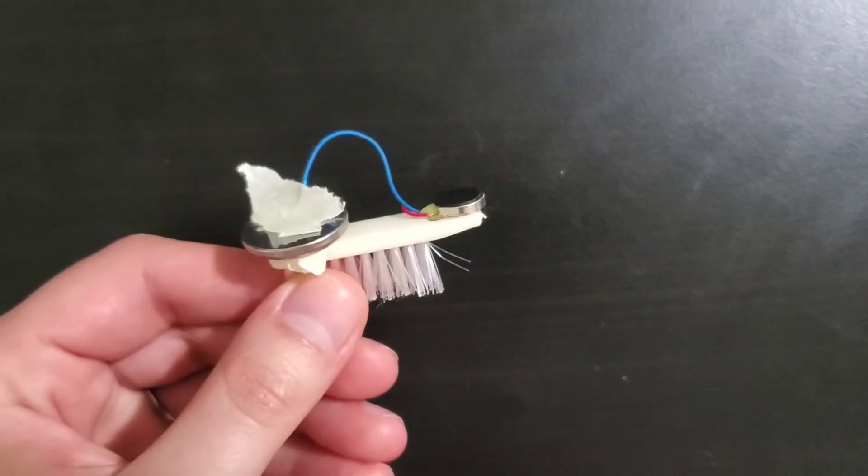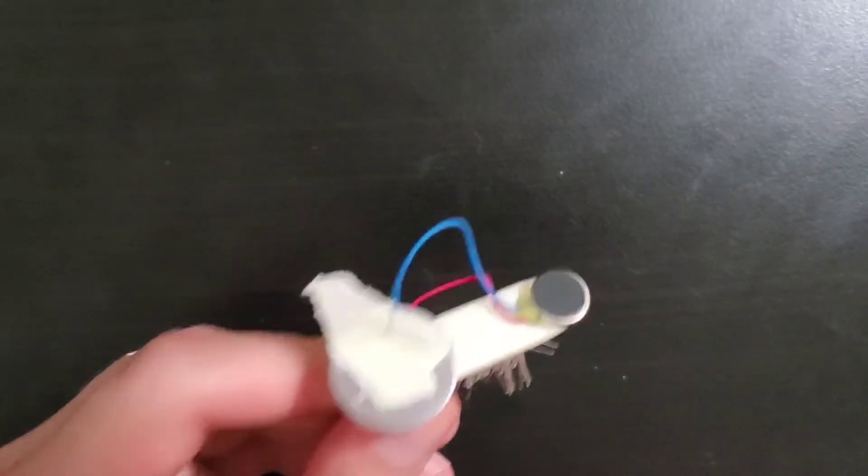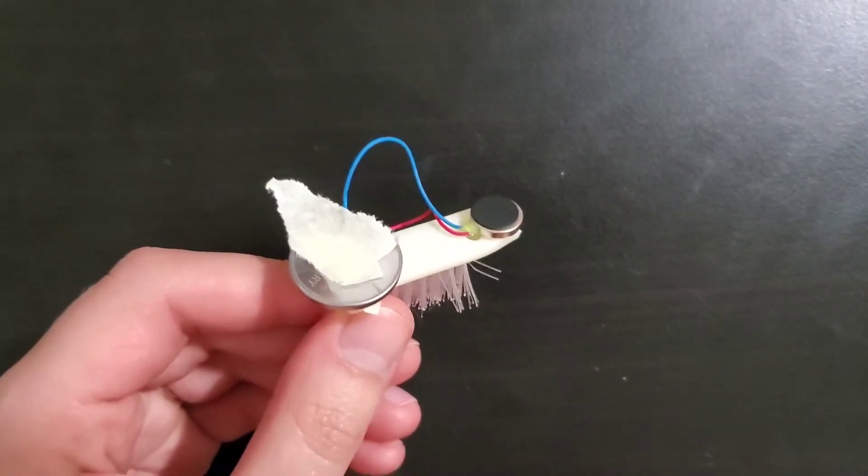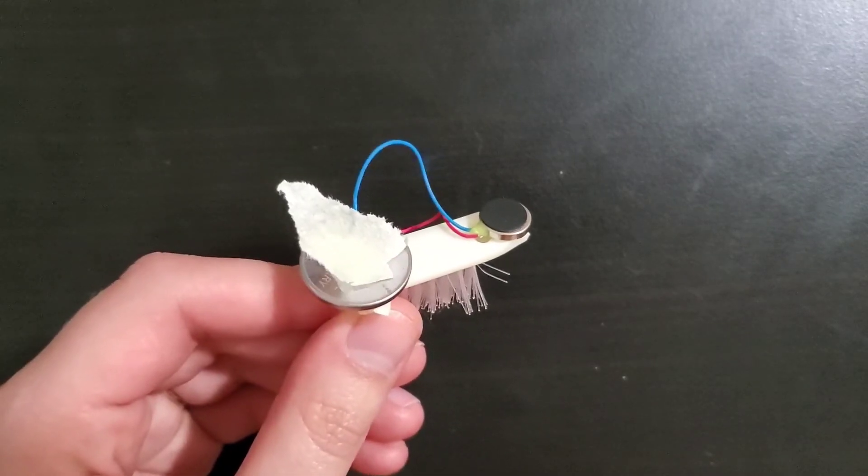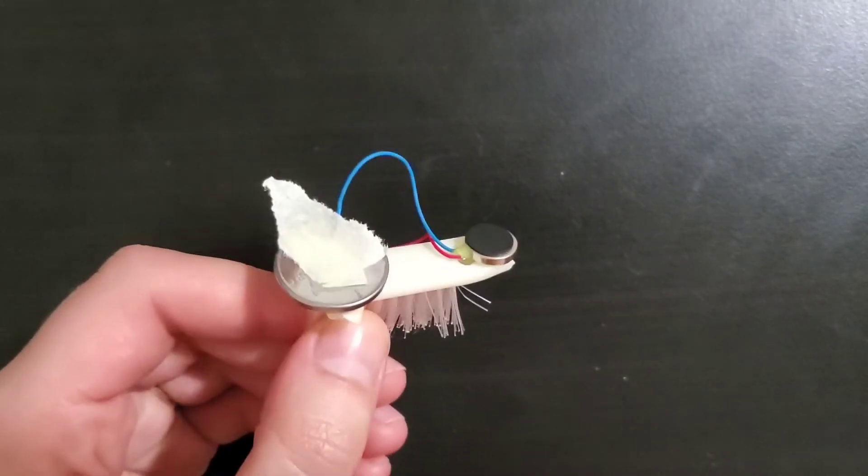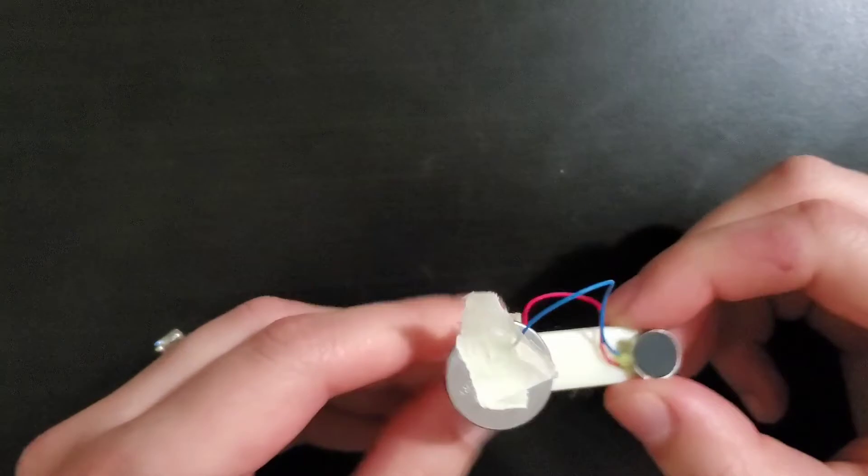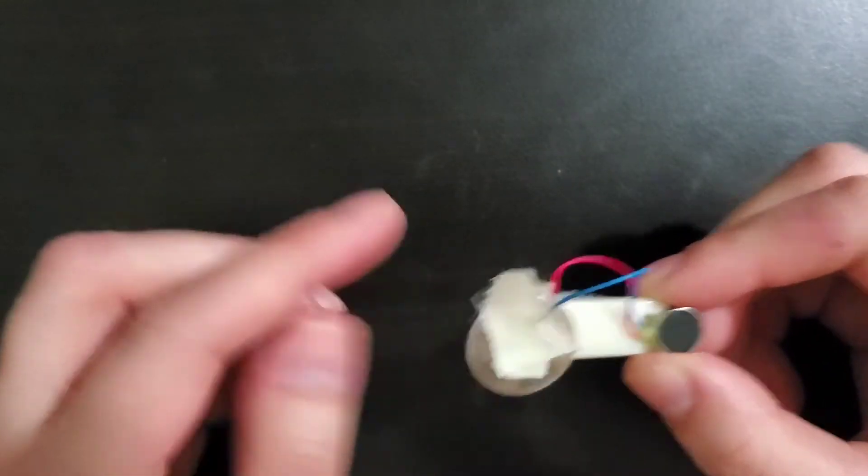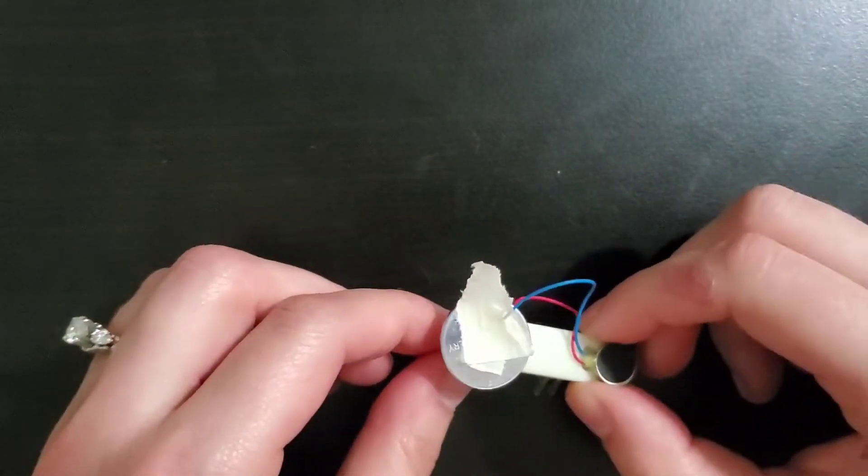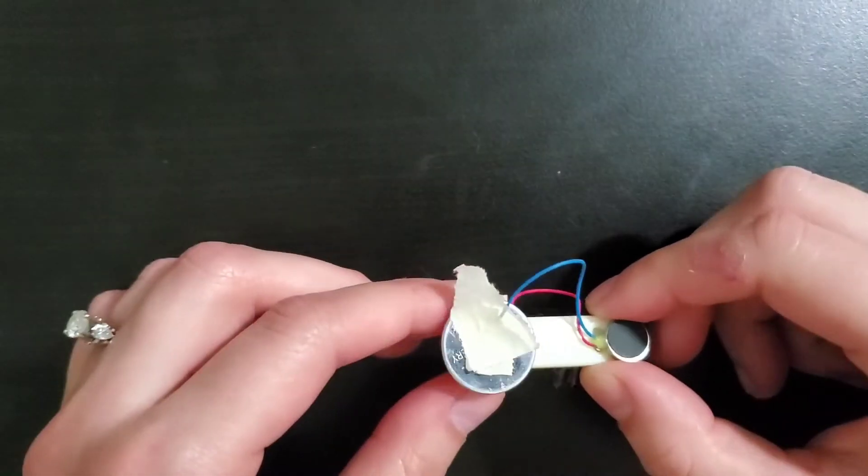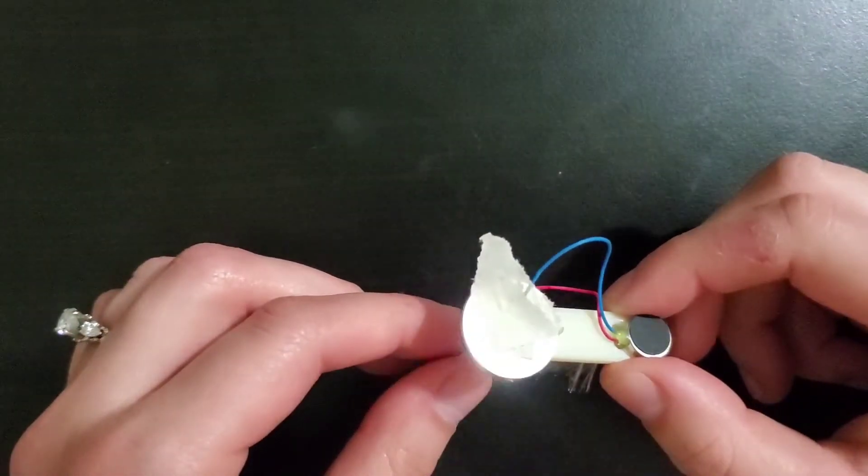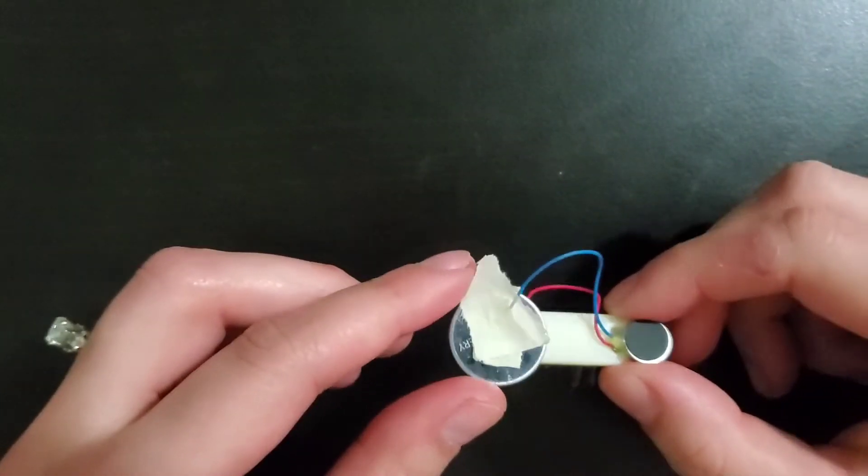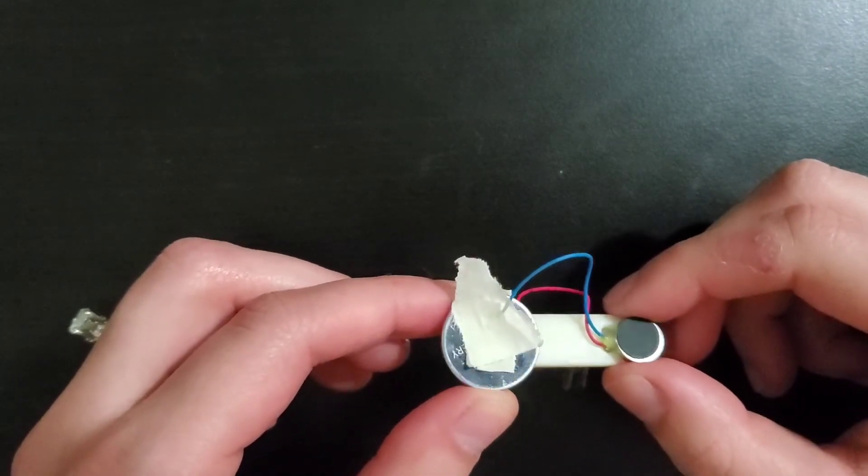Now that you have your working bristle bot I want you to think a little bit about variables. So variable is something that can change or be changed that will have an effect on our outcome. So let's say you want your bristle bot to spin in circles or you want it to travel in a certain direction. My challenge to you is what can you change on your bristle bot to make that happen?